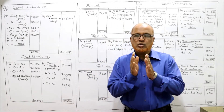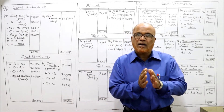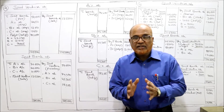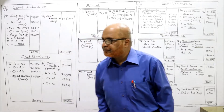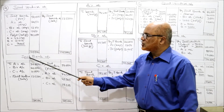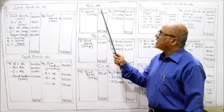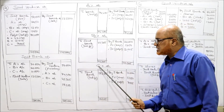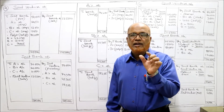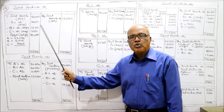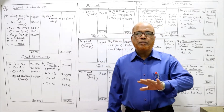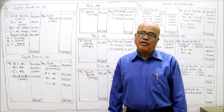That means we have to open joint venture account, joint bank account, A's account, B's account, C's account. So comparatively this problem is very simple. First we make joint venture account, second joint bank account, then A's account, B's account, C's account. Until and unless you know the journal entries you cannot post them into ledger accounts. The first requirement is you should be perfect regarding the journal entries.